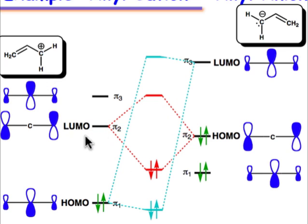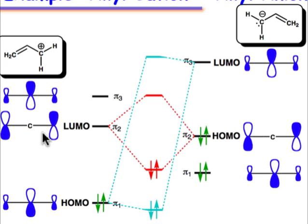So let's focus on that as the major frontier orbital interaction. The next thing we need to do is identify the way in which they'll come together in order to form a reaction. We focus on the LCAO representations of their molecular orbitals and try to match coefficients both in terms of sign and in terms of the size of the coefficients.